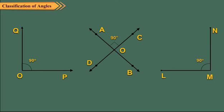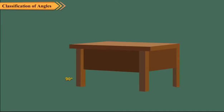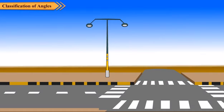You can see many examples of perpendicularity in your daily life. The legs of a table are perpendicular to the ground. An electricity pole is also perpendicular to the ground, and so on.